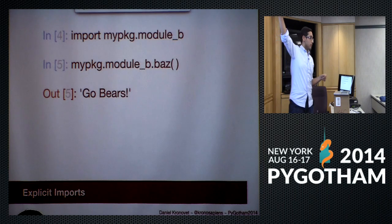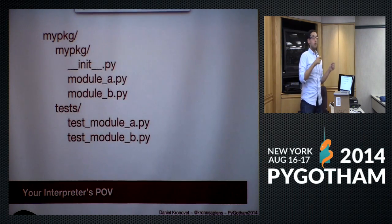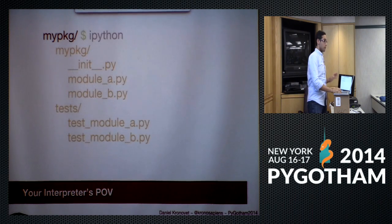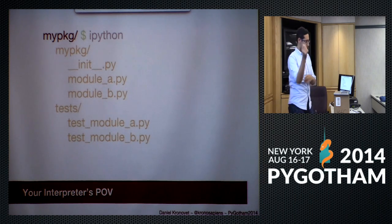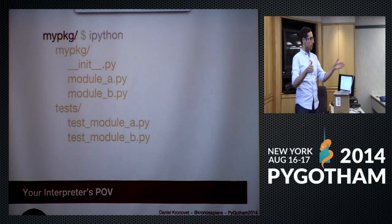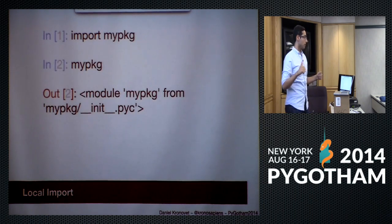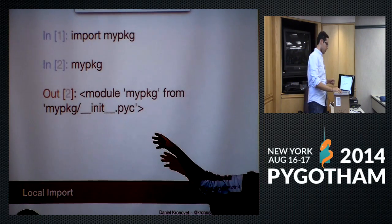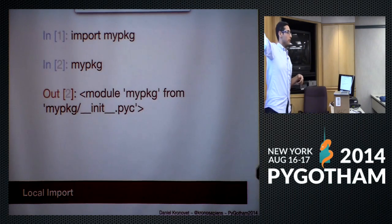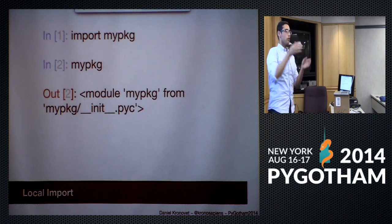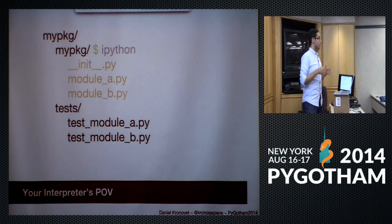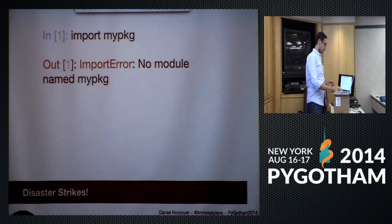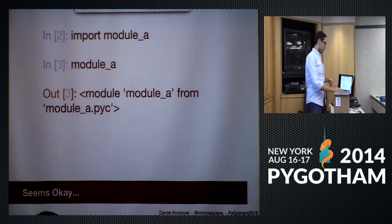Wherever you start your interpreter is its perspective. Everything in the directory where you started and downwards, the interpreter will know about; anything above it, it will not know about. If you start at the top level, you can import your package directly — the interpreter says 'my package is right here, I don't have to look anywhere else.' However, if you go down one level and try to import, you get an error where it would not see the package.